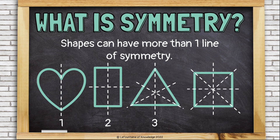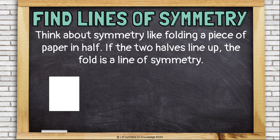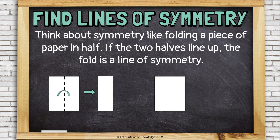Think about symmetry like folding a piece of paper in half. If the two halves line up, the fold is a line of symmetry. Here's a piece of paper — I can fold it in half down the middle like this, or I could fold it diagonally from corner to corner like this.